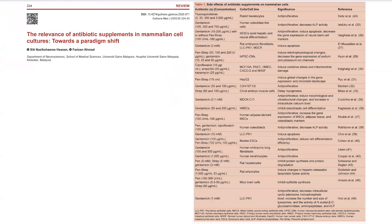They're not the only paper to have found differences. A review article shows the kinds of differences found with the use of different antibiotics and different cell lines. A lot of them are anti-proliferative — they can prevent the cells from growing — and some induce apoptosis, basically causing these cells to kill themselves, while others induce changes in gene expression.